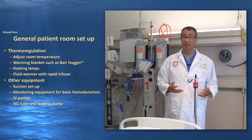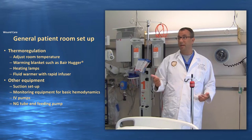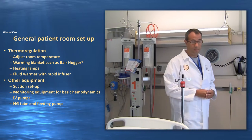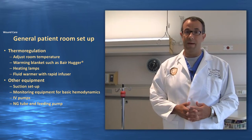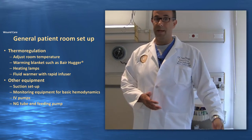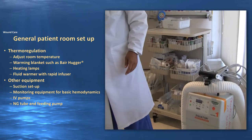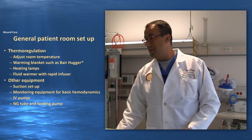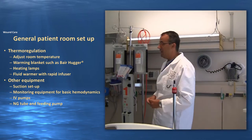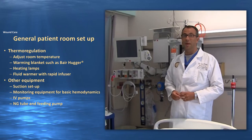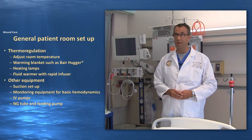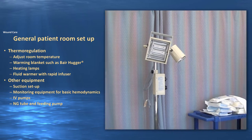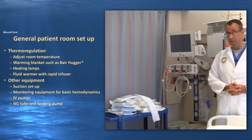The first thing you're going to want to do is heat up your room. Turn up the heating as much as you can because these patients are obviously going to be thermoregulatory challenged. The next thing you're going to want to have available is a bear hugger or other warming blanket device, along with the blanket itself. You'll also want to use heating lamps — such as the overhead ones we have here — or other commercially available devices that will aid in helping thermoregulation in your patient.